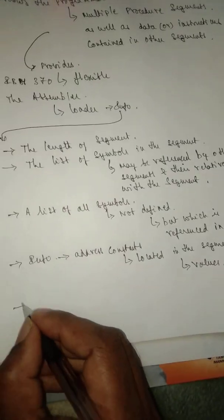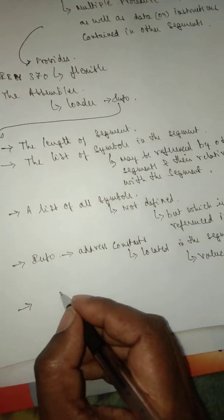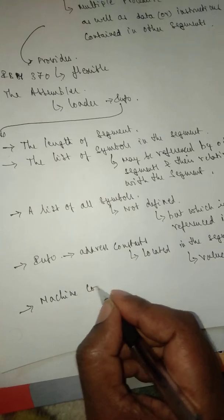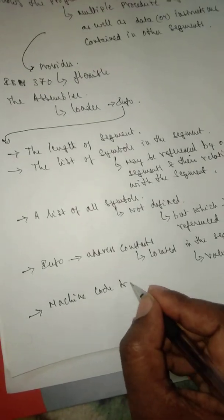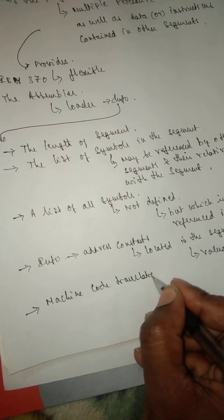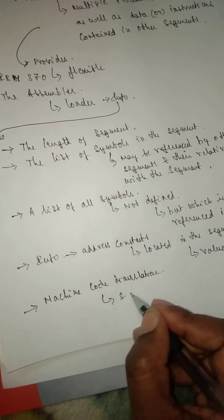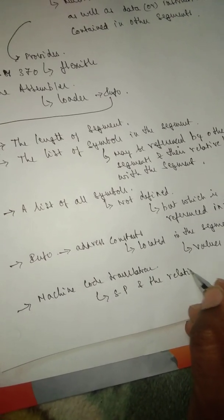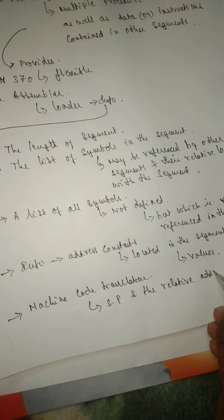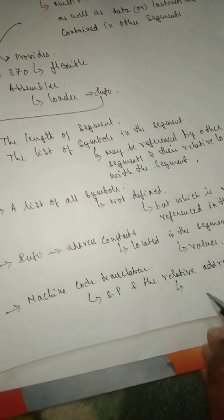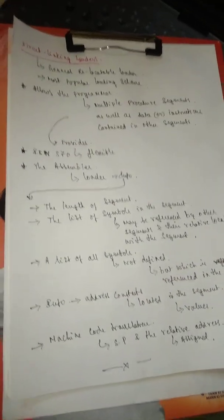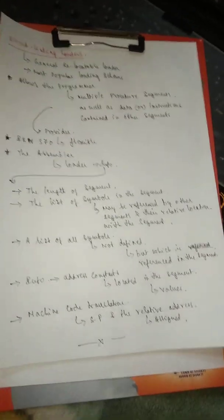And the last information is the machine code translation of the source program, and the relative and mobile information. So these are the informations that you have to discuss if anything is asked based on direct linking loader. Thank you.